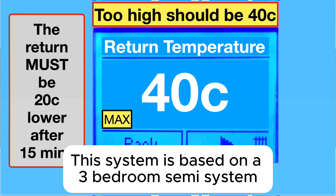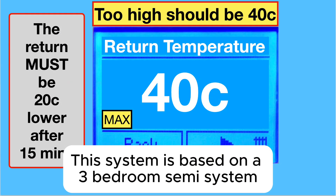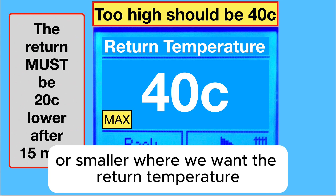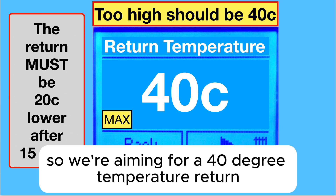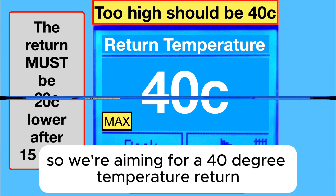This system is based on a three-bedroom semi-system or smaller, where we want the return temperature to be 20 degrees lower than the flow. So we're aiming for a 40 degree return temperature.